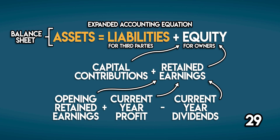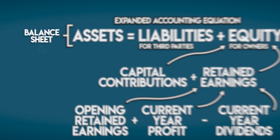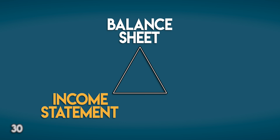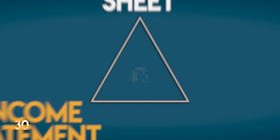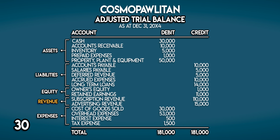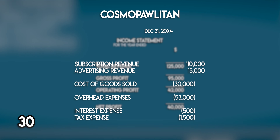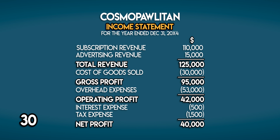Another important financial statement is the income statement, or statement of profit and loss — P&L for short. We build an income statement using the revenue and expense numbers from the trial balance. It summarizes a business's revenues and expenses over a period of time. On the bottom line we have profit for the current year, which we can measure accurately using the accrual method by recording revenue as it's earned and expenses as they are incurred.